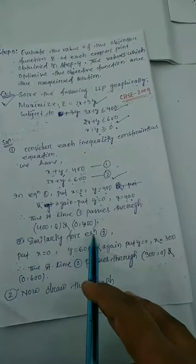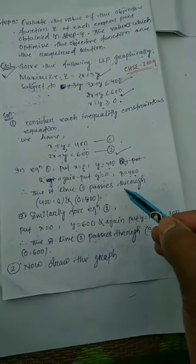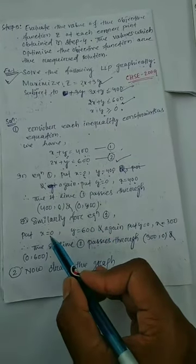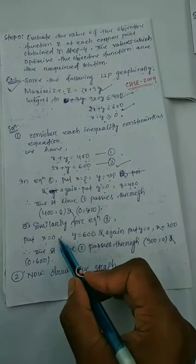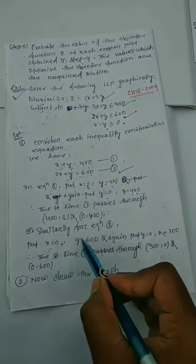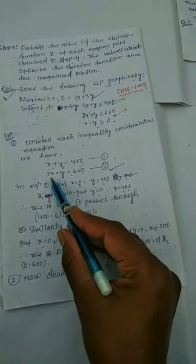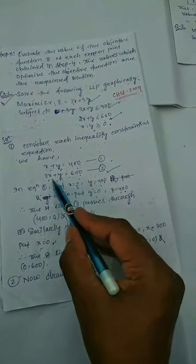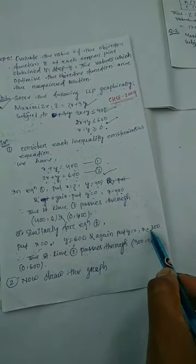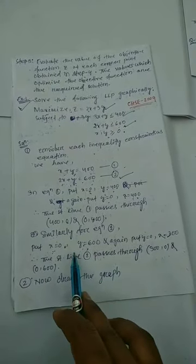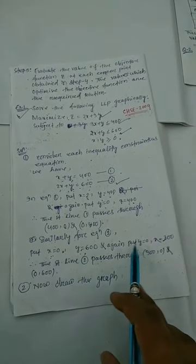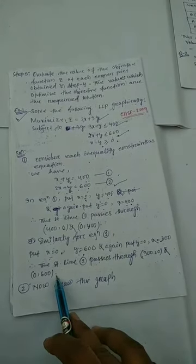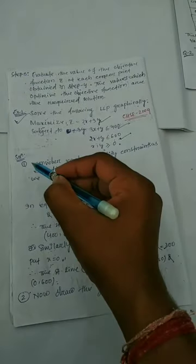Similarly for equation 2 (2x plus y equals 600): put x equals 0 — then y equals 600, giving point (0, 600). Put y equals 0 — then x equals 600 divided by 2 equals 300, giving point (300, 0). So we have two points on line 2: (300, 0) and (0, 600), and we can draw the graph of line 2.